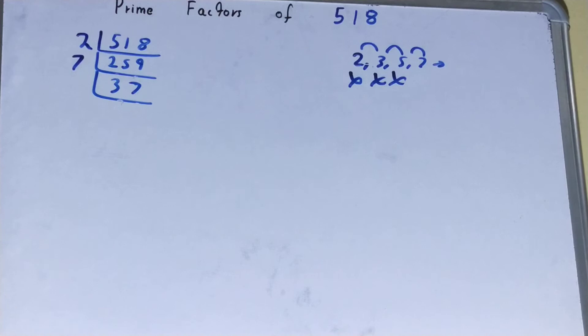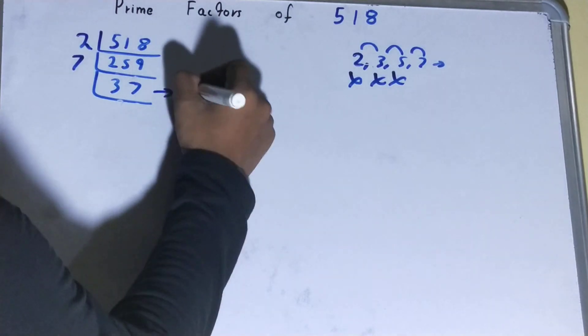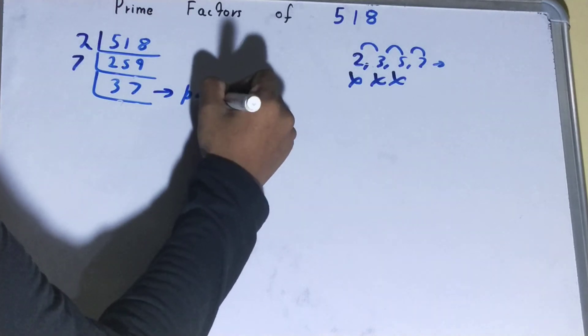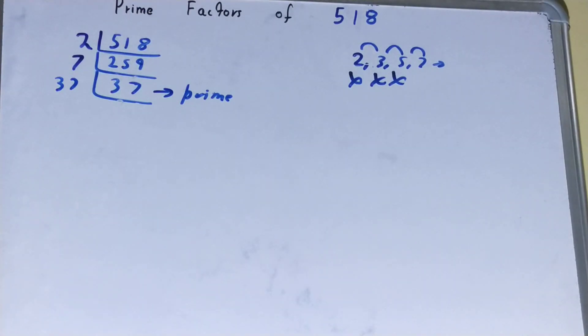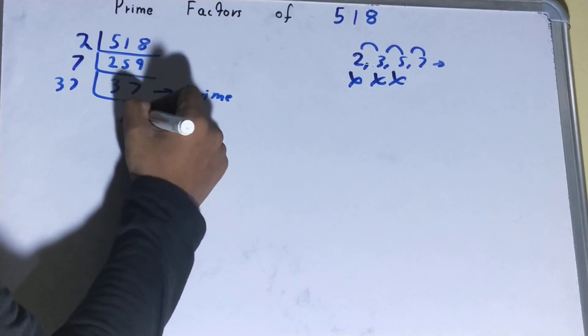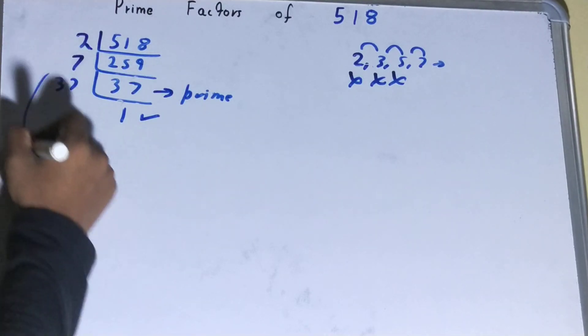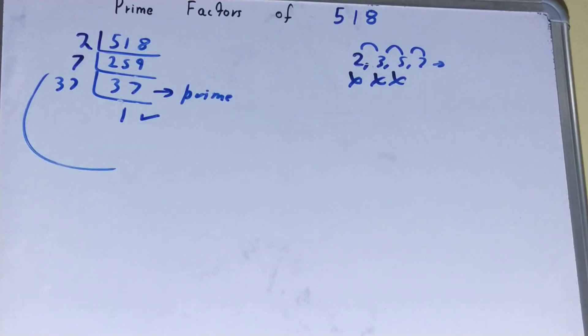Now 37 is not divisible by 7, and it is also a prime number, so it is only divisible by itself. When you do so, you will be left with 1. Once you are left with 1, the work is done, and whatever you have on the left-hand side will be the prime factors of the number 518.